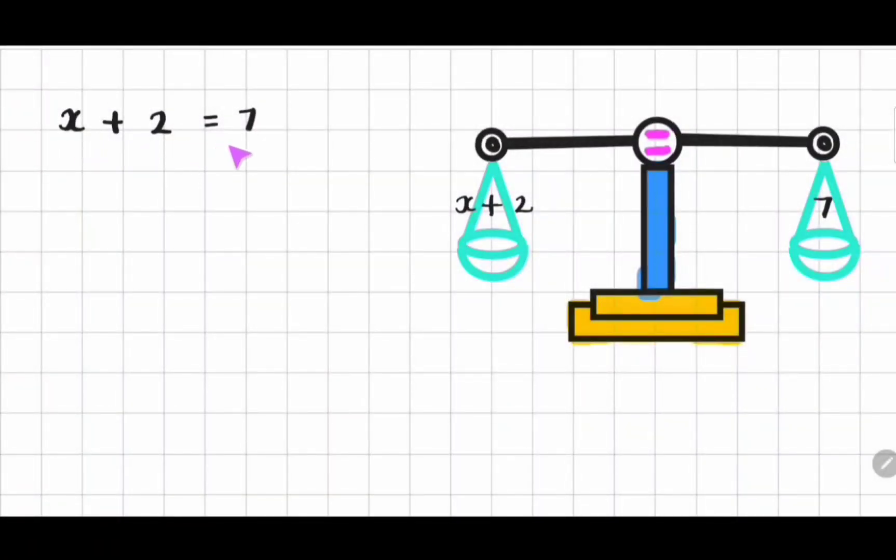Let's solve this equation now. What we want is an answer like x equals some number, but the plus 2 is in the way. We can cancel out the plus 2 with a minus 2, because plus 2 minus 2 equals 0. So let us subtract 2 from both sides, which means x equals 7 minus 2. Therefore, x equals 5.